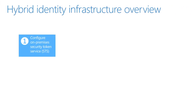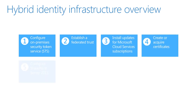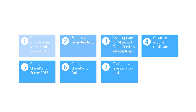These topics were discussed in detail in Module 2.1, Hybrid Environment Infrastructure: configuring the on-premises security token service, establishing a federated trust, installing updates for Microsoft Cloud Services subscriptions, creating or acquiring certificates, configuring SharePoint Server 2013, configuring SharePoint Online, and configuring a reverse proxy device.